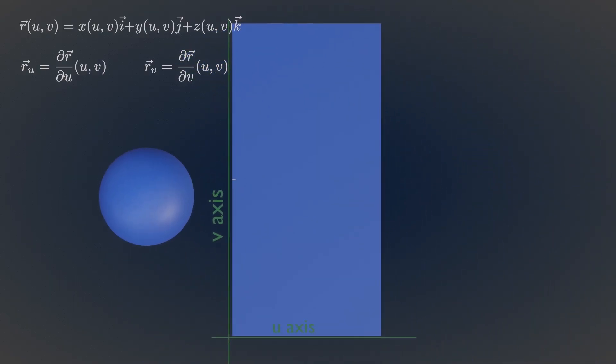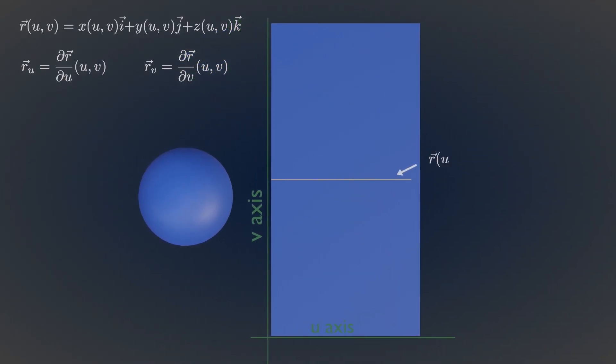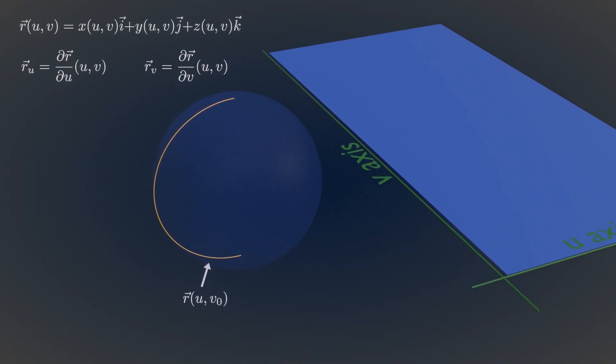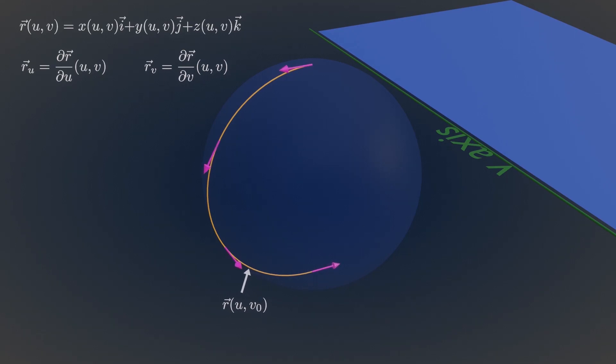For instance, if v is held constant, then this parameterization is a vector-valued function of a single parameter and defines a curve that lies on the surface of our sphere. Its partial derivative is tangent to our surface.